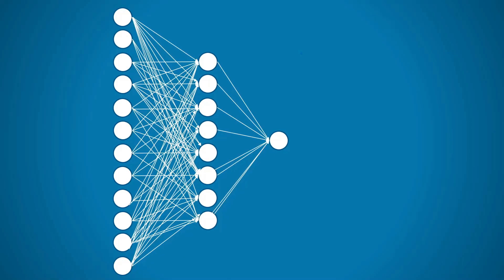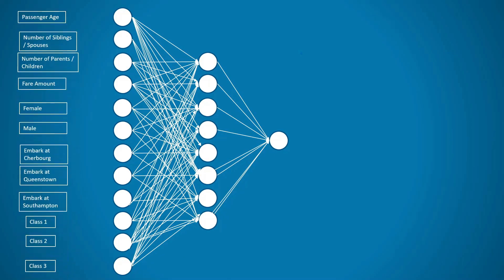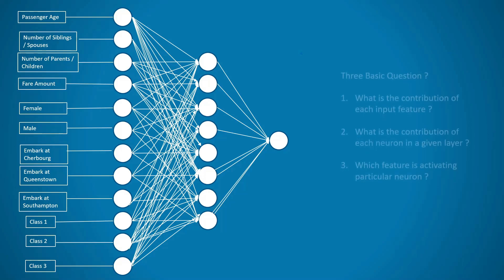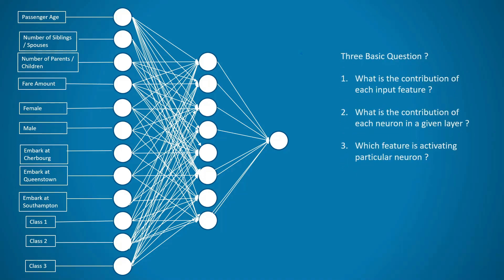Let's try to solve this problem using a deep learning model. This is a quite simple deep learning model where we fill in input features like the passenger's age, gender, and embarking point, and then try to find out whether the passenger is going to survive after the shipwreck. Once we have this model defined, we need to interpret it.